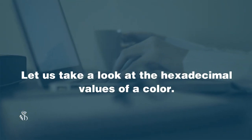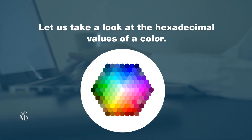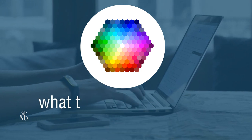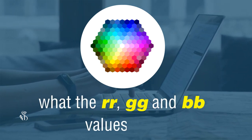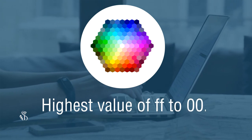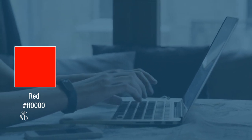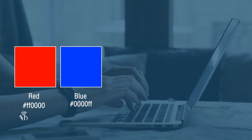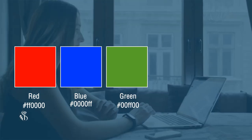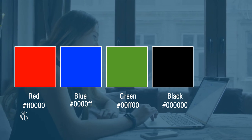HEX values: any hexadecimal color value is represented as #RRGGBB, where RR, GG, and BB are the color values ranging from the highest value FF to 00. So red color is #FF0000, blue is #0000FF, green is #00FF00, and black is #000000.